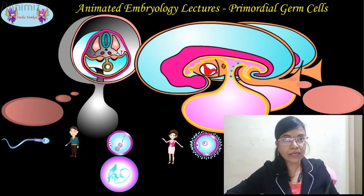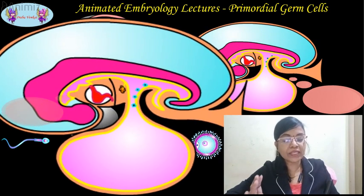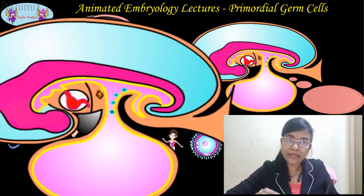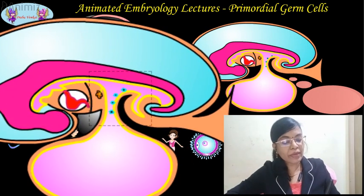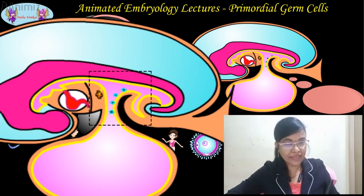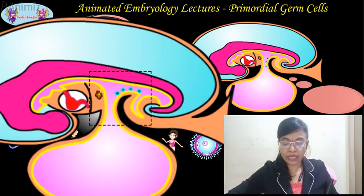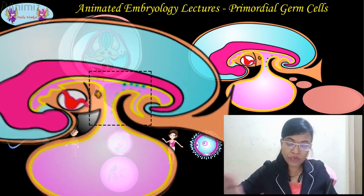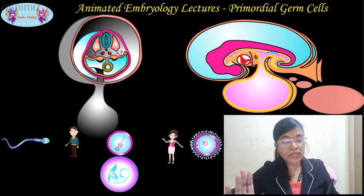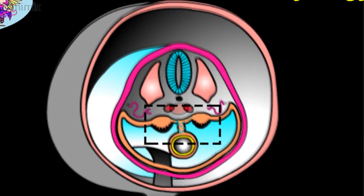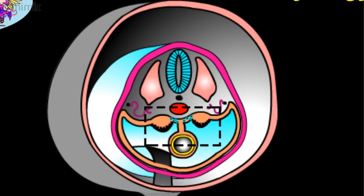By the fourth week, the primordial germ cells present in the wall of the yolk sac near the allantois start moving by amoeboid movement towards the developing indifferent gonadal ridges. First they move along the wall of the yolk sac, next over the hindgut, and then move through the dorsal mesentery to reach the indifferent gonadal ridges by the fifth week. On the way, the primordial germ cells increase in number by mitotic division.